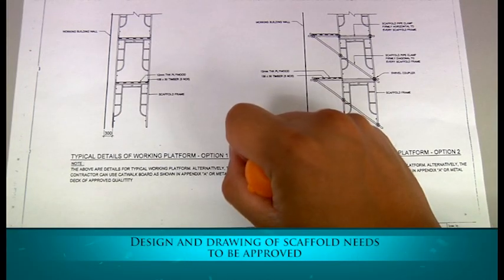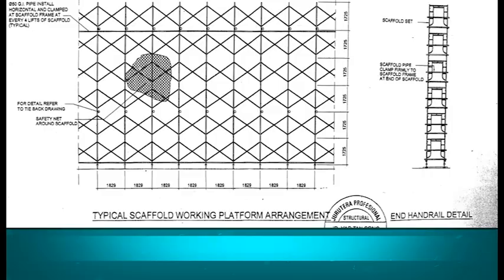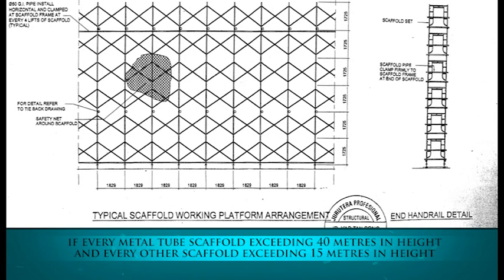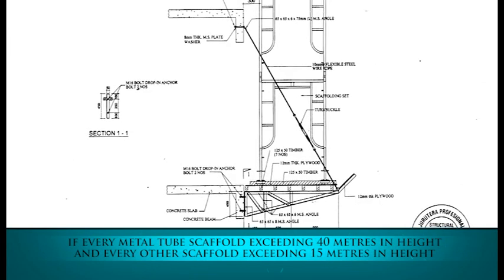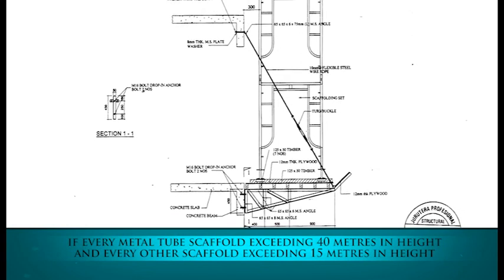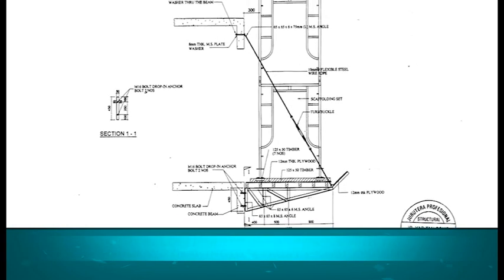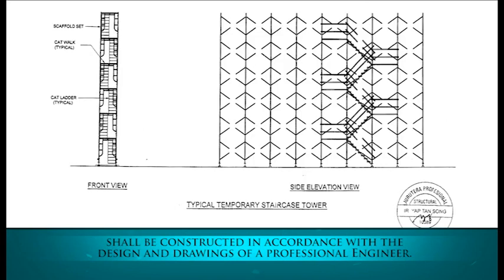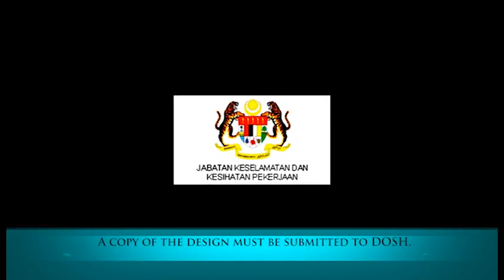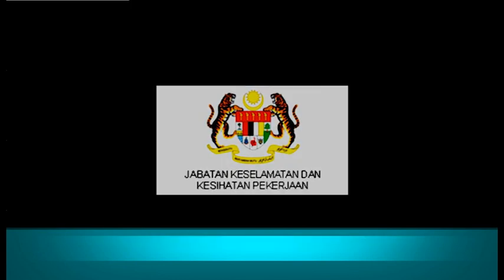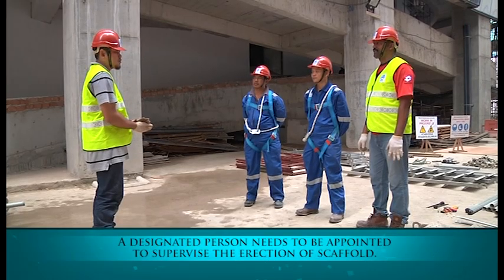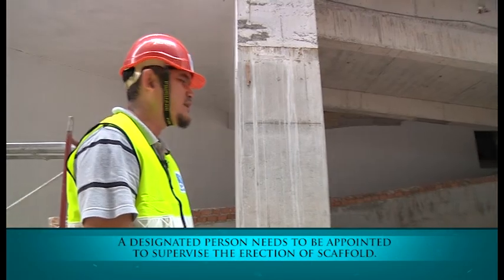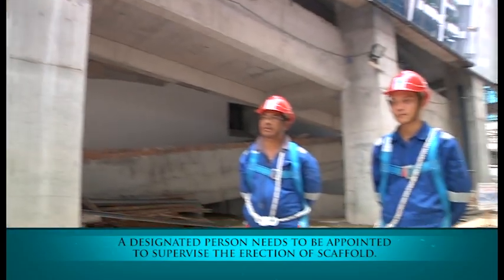Design and drawings of scaffold need to be approved: every metal tube scaffold exceeding 40 meters in height and every other scaffold exceeding 15 meters in height shall be constructed in accordance with the design and drawings of a professional engineer. A copy of the design must be submitted to DOSH. A designated person needs to be appointed to supervise the erection of scaffold.